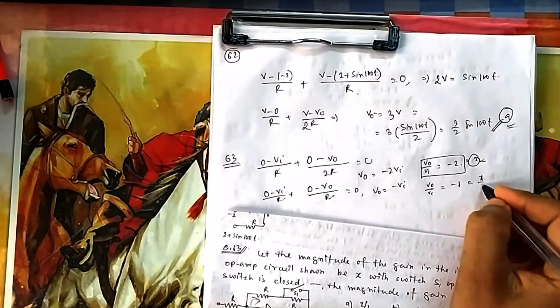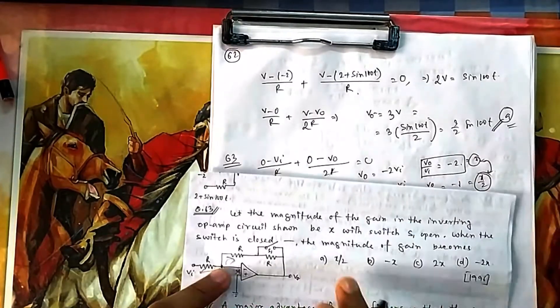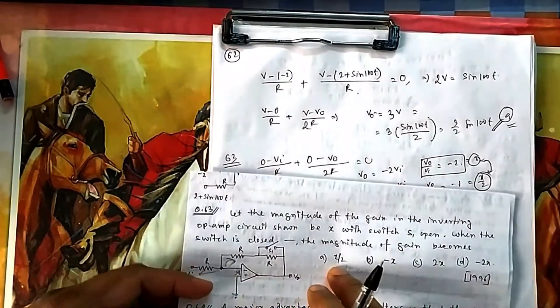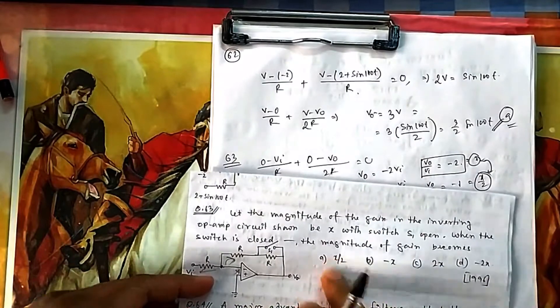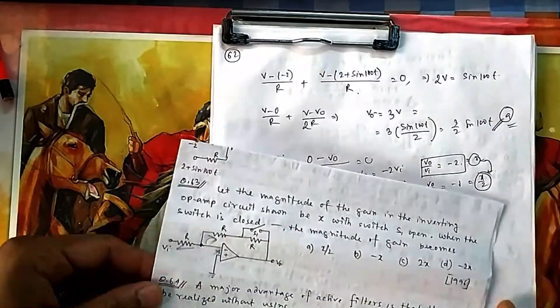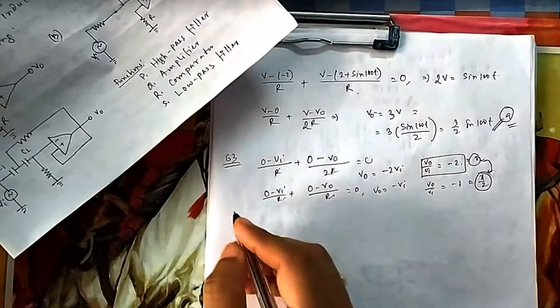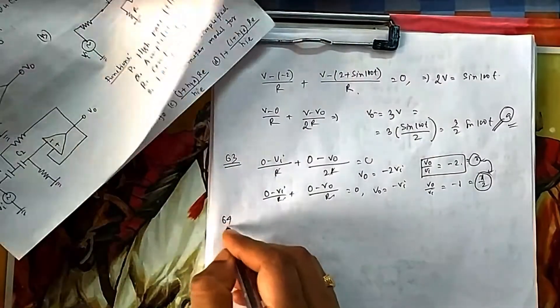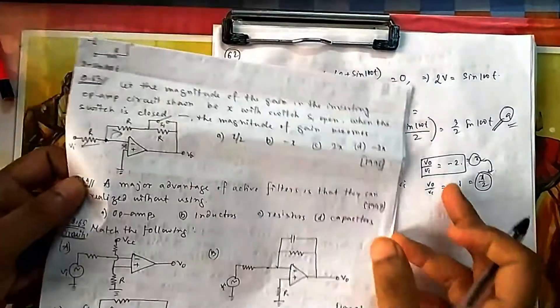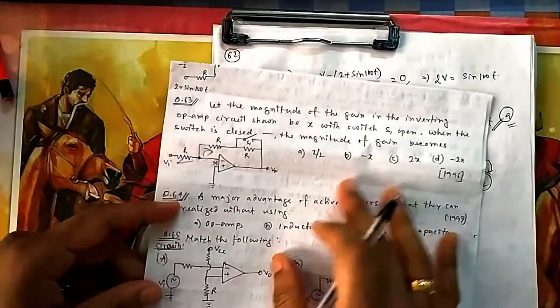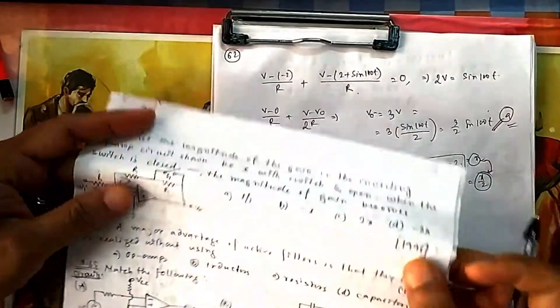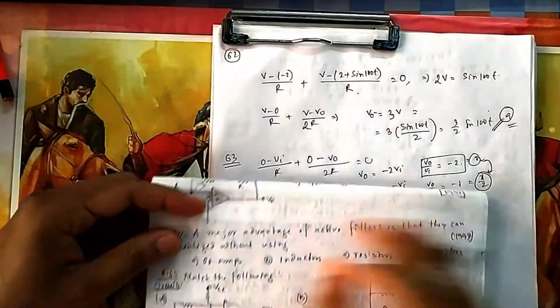The magnitude of gain when closed is 1, which is X/2. So closing the switch reduces the gain by half. Simple nodal analysis gives the answer directly.